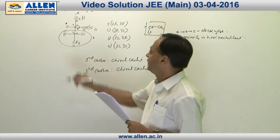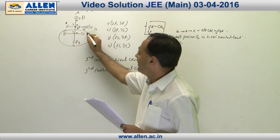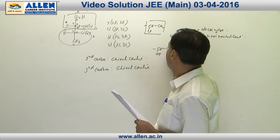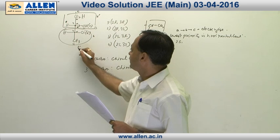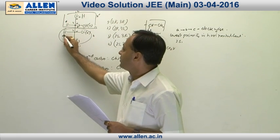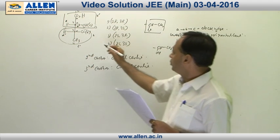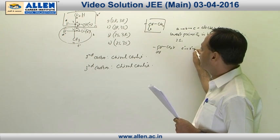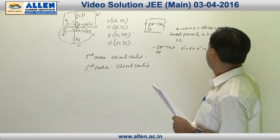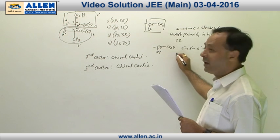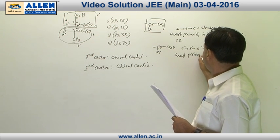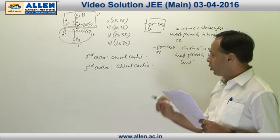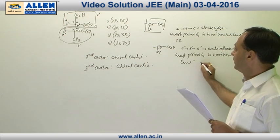Now go through the third chiral center. Cl has the highest priority A'. The second highest priority is the entire group — that is actually CH(OH) single bond COOH — that is B'. This is C' — the methyl group is C' and hydrogen is D'. So going through the priority order A' to B' to C', it is becoming anticlockwise. As the lowest priority group is again in the horizontal line, the configuration around that chiral center is 3R.